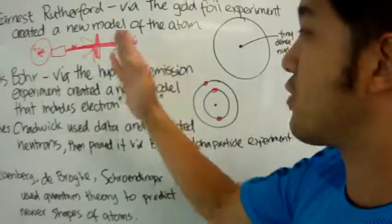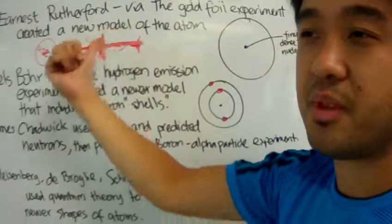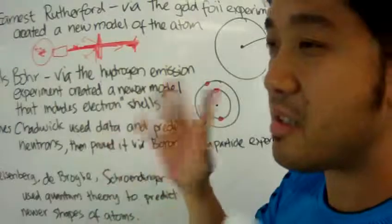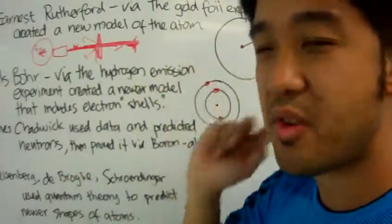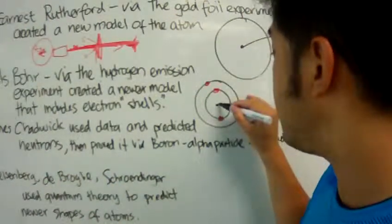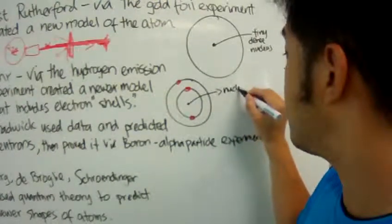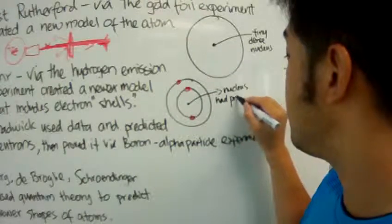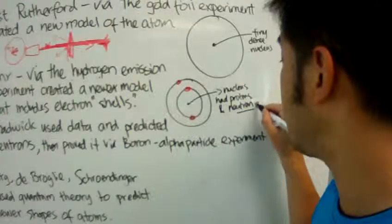And this is what he termed neutrons. And then he proved it by the boron alpha particle experiment. Instead of gold, he bombarded boron with alpha particles. And then he calculated some more and discovered that there's neutrons. Basically, he added upon Bohr's model and said that the nucleus had protons and neutrons, and the electrons are out there orbiting in a nice planetary orbit around the nucleus.